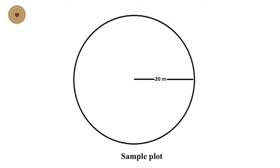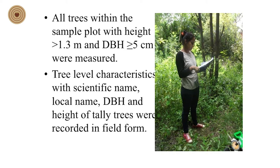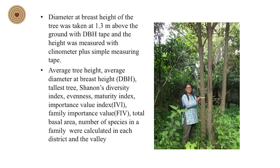This is the circular sample plot. During data collection, all trees within the sample plot with height more than 1.3 meters and DBH equal to or more than 5 centimeters were measured. Tree-level characteristics were recorded in the field form. Diameter at breast height was taken at 1.3 meters above ground using a DBH tape, and tree heights were also measured.